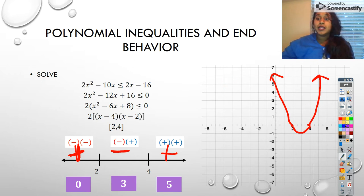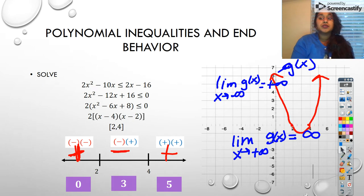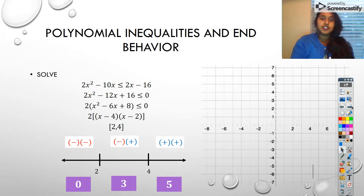So I can end up writing correct limit notation based off of this. So my limit as, let's just call this g of x. My limit as x approaches negative infinity, because that's this side, equals positive infinity. And then on this side, my limit as x approaches positive infinity of g of x is equal to positive infinity as well. So again, just connecting back to that end behavior, it is possible to solve it using this sign chart method.